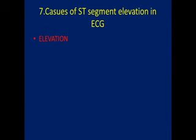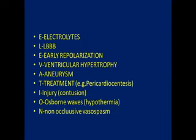The seventh mnemonic is for causes of ST segment elevation in ECG. The mnemonic is ELEVATION: E for electrolytes, L for left bundle branch block, E for early repolarization, V for ventricular hypertrophy, A for aneurysm, T for treatment, I for injury, O for Osborn waves (like hypothermia), and N for non-occlusive vasospasm.